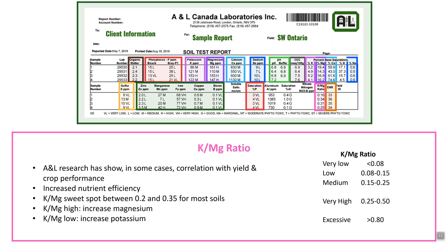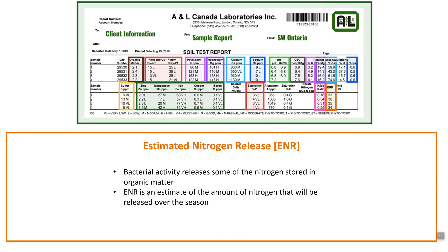Next on our soil test report we look at the K to Mag ratio. A&L's research has shown a correlation between yield and crop performance and the K to Mag ratio — as the ratio improves, we see an increase in nutrient efficiency. The sweet spot seems to be between 0.2 and 0.35 for most soils. To change a high K to Mag ratio, increase your magnesium levels; if the ratio is low, increasing potassium or adding potash to the soil will help adjust it.